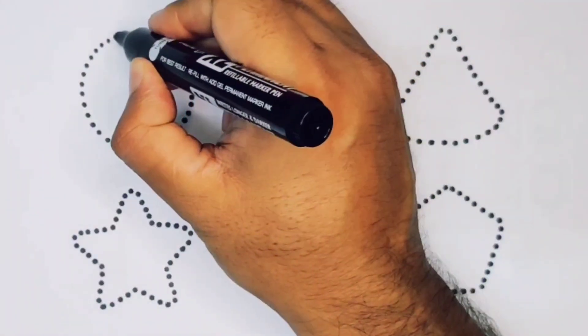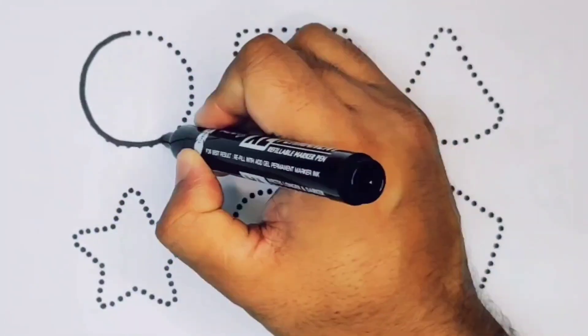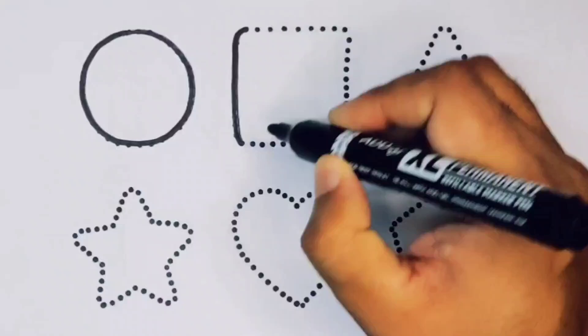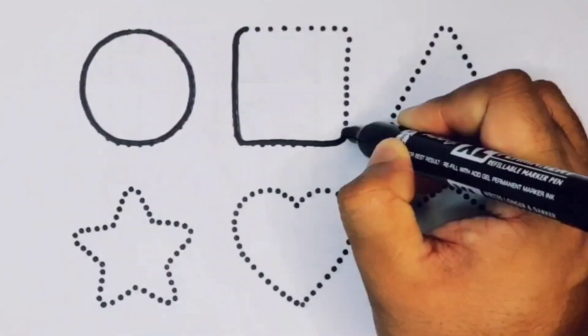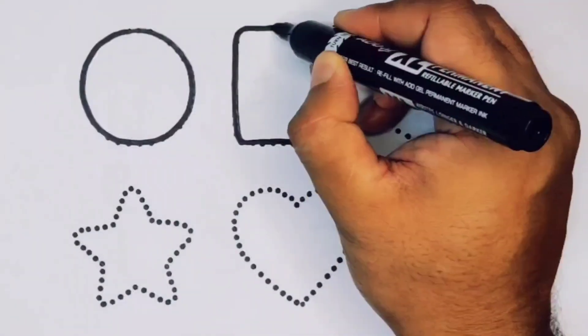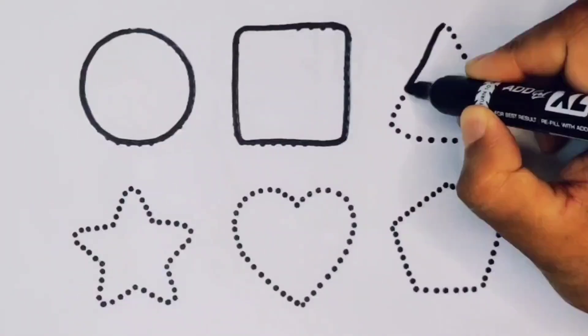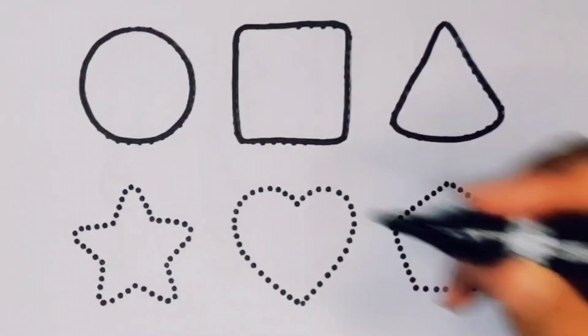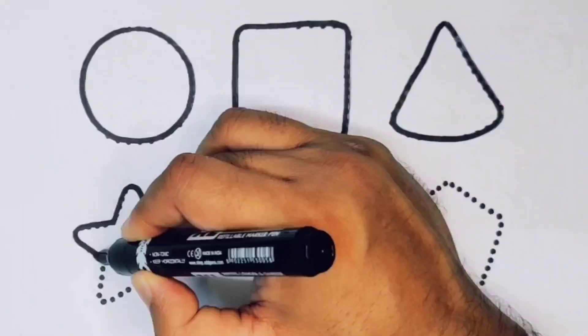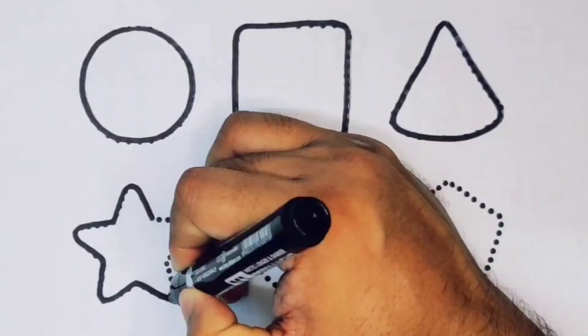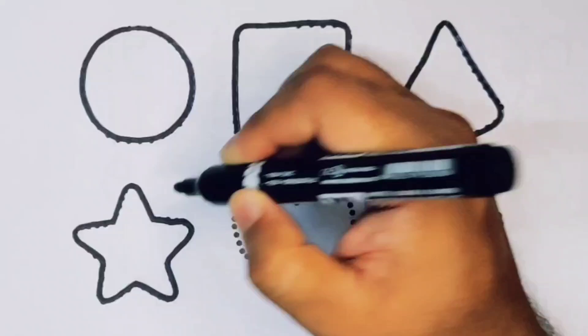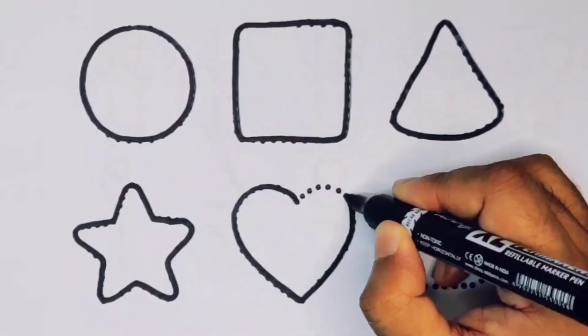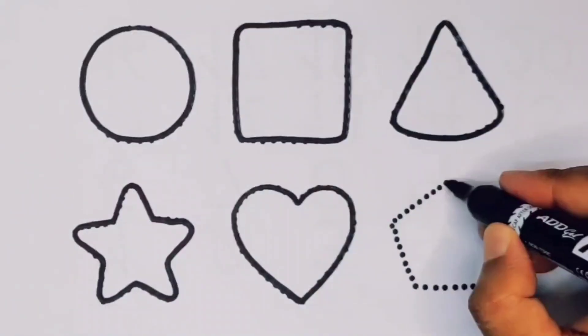Now we are going to draw the shapes: circle, square, triangle, star, heart, and pentagon.